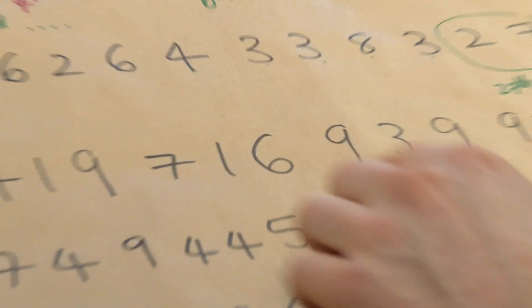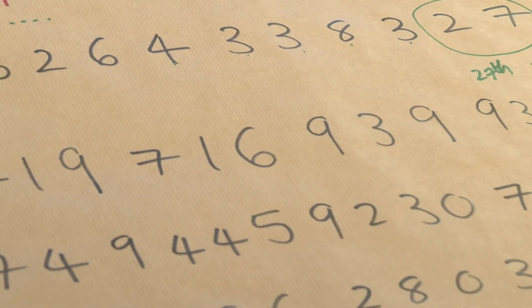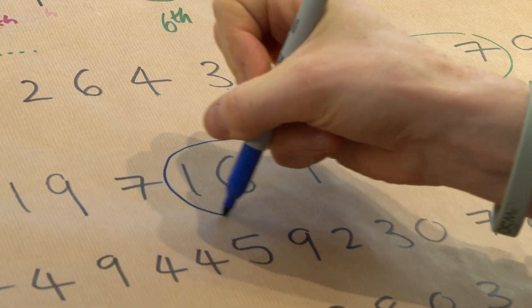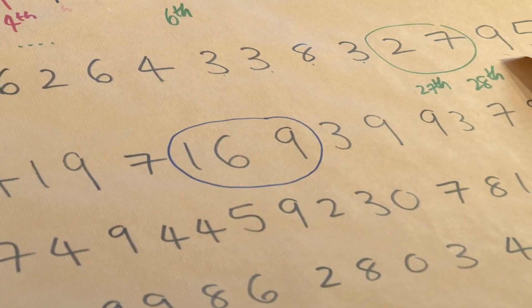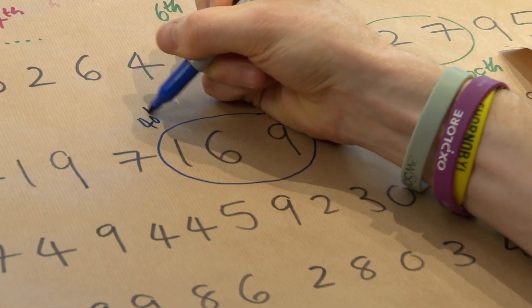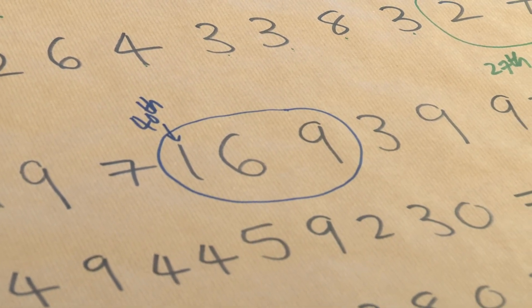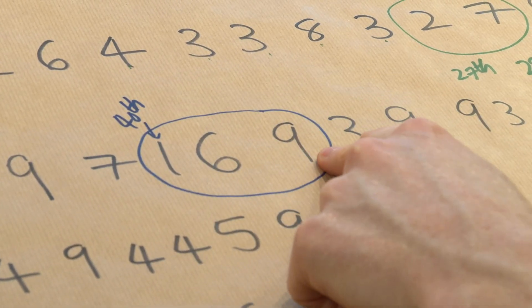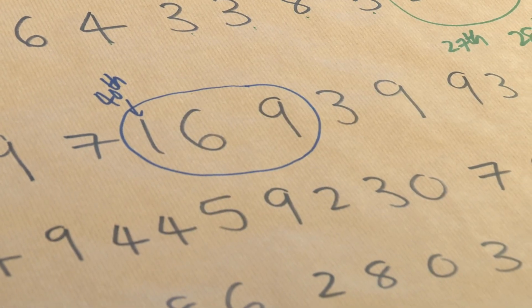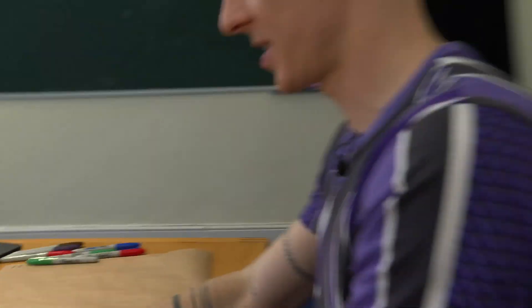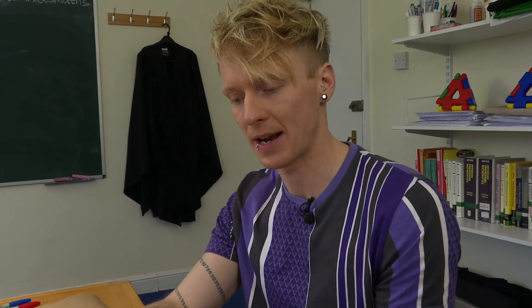We should be able to spot it — there it is, 169 is down here coming in at position 40: 40th, 41st, 42nd. So the number 169 appears in position 40. We started with 169, and that has sort of taken us to position 40 in the expansion. So then you say: where does 40 appear in the expansion of pi?